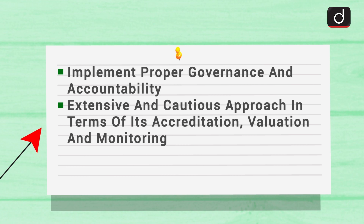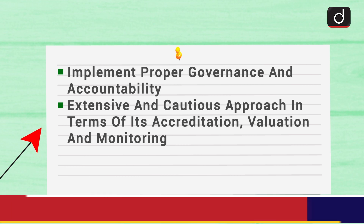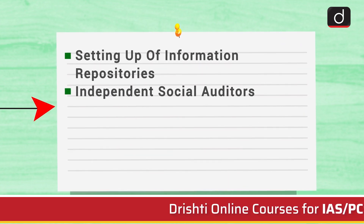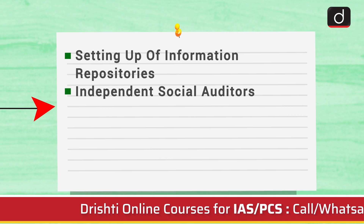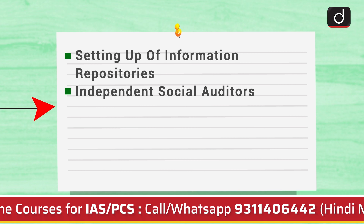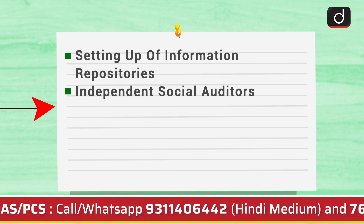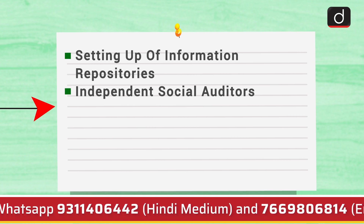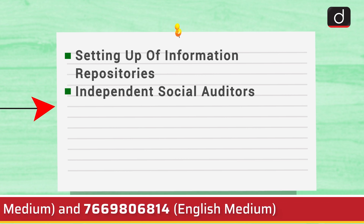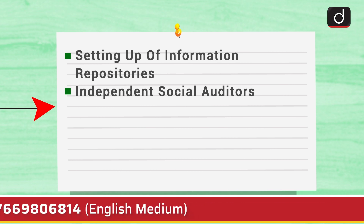Most importantly, on how we can implement proper governance and accountability. This can be achieved by having an extensive and cautious approach in terms of its accreditation, valuation, and monitoring. Also, setting up of information repositories on which NPOs should be registered — this will provide credible, standardized information about the NPOs. Information repositories are also expected to create appropriate financial reporting standards so that NPOs can adhere to them. Similarly, social auditors need to perform an independent verification of impact reporting.